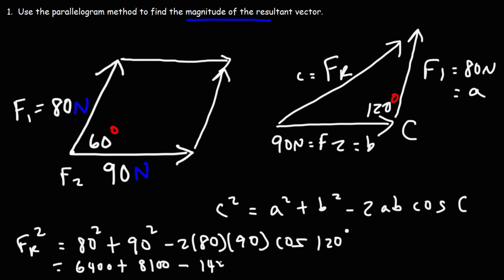That's 14,400. And then cosine 120 is negative 1 half.